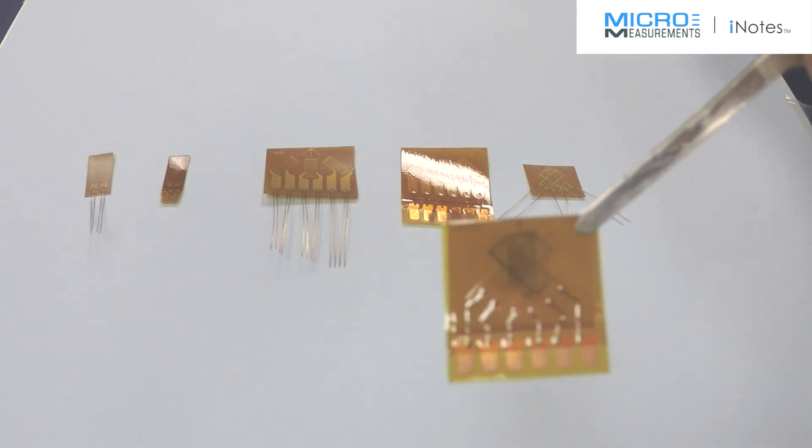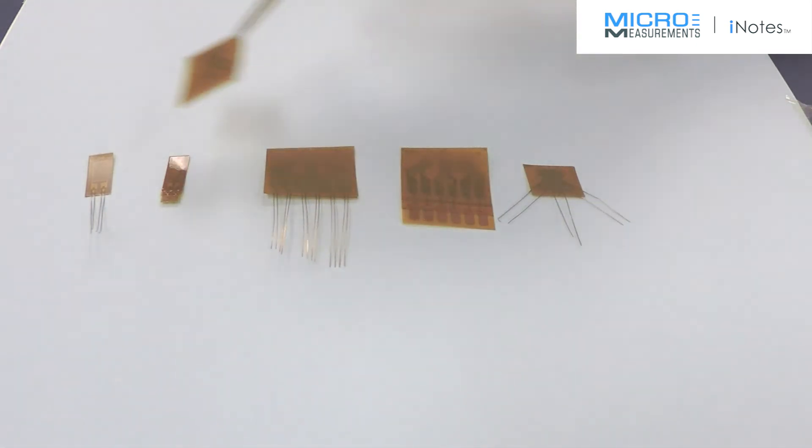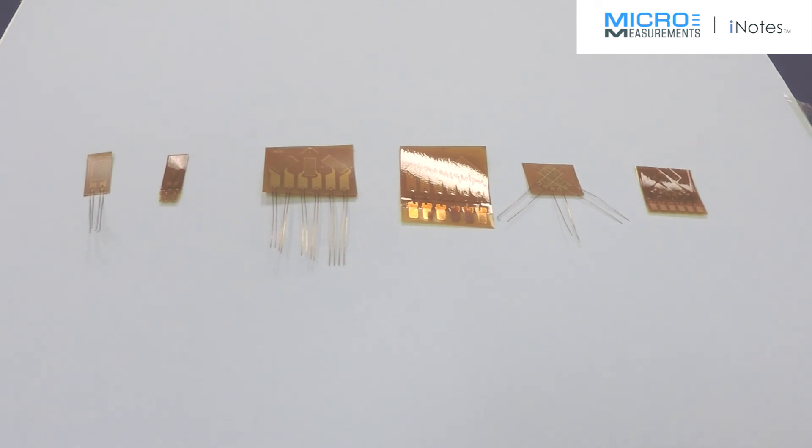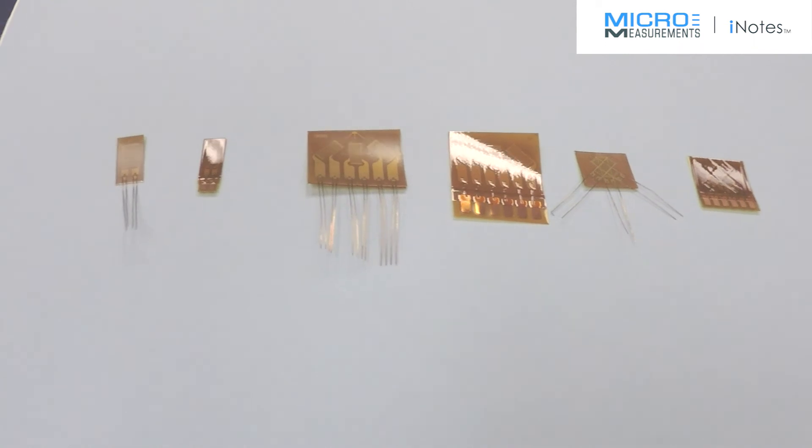So there's your answer. If it's a planar gauge and standard WA construction, then you'll have a pair of leads per tab. If it's a stacked rosette, T or otherwise, then you're going to have a single lead per gauge.